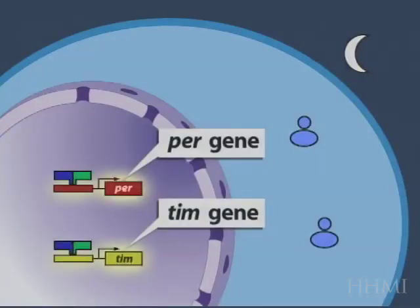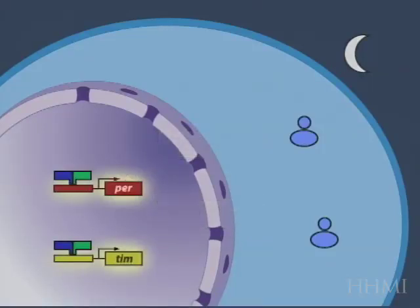So, here we have the period gene and the timeless gene, and they are both driven, transcription is driven, by CLOCK and CYCLE, which binds to both promoters. So, these proteins accumulate, and the RNA accumulates, is synthesized.